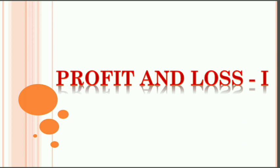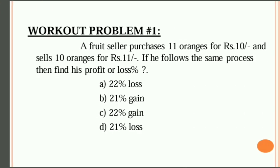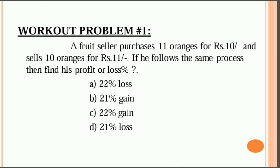A fruit seller purchases 11 oranges for rupees 10 and sells 10 oranges for rupees 11. If he follows the same process, find his profit or loss percentage. The options are: 22% loss, 21% gain, 22% gain, or 21% loss.